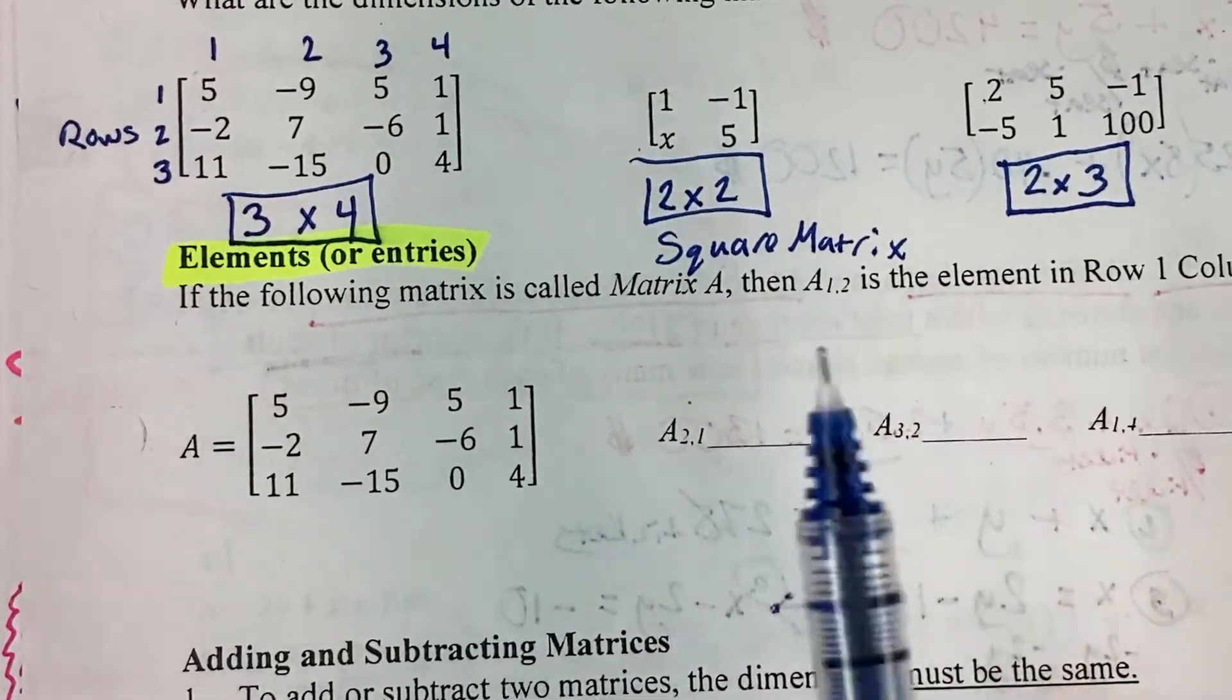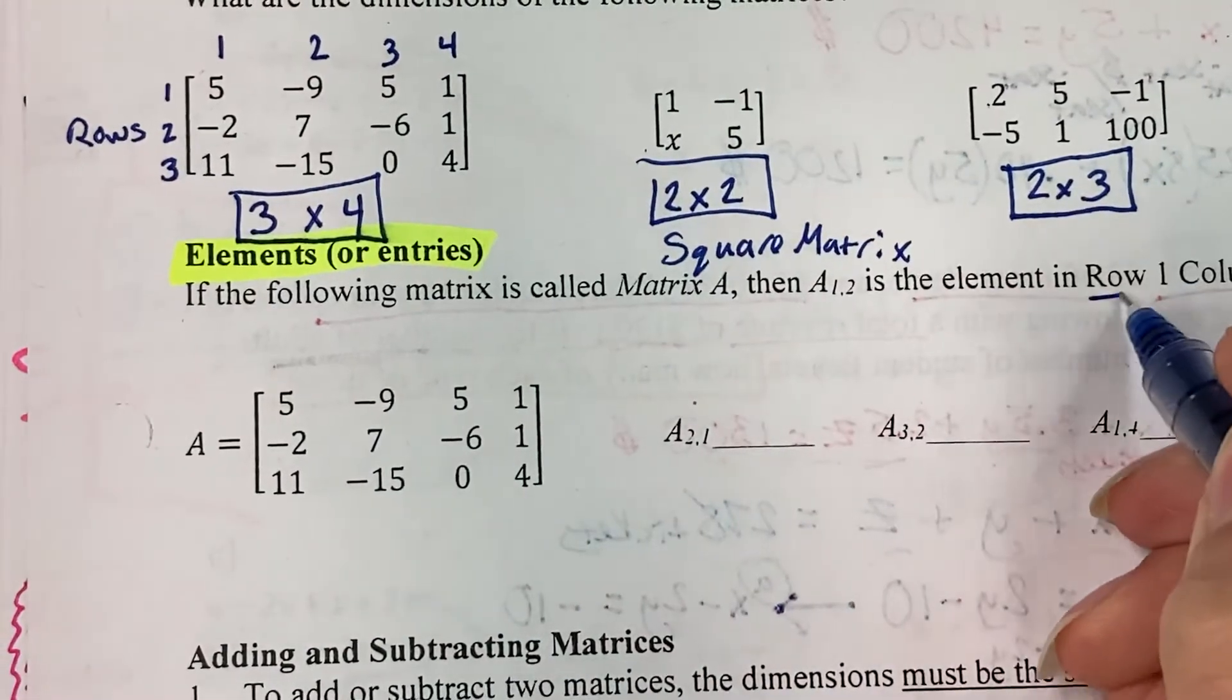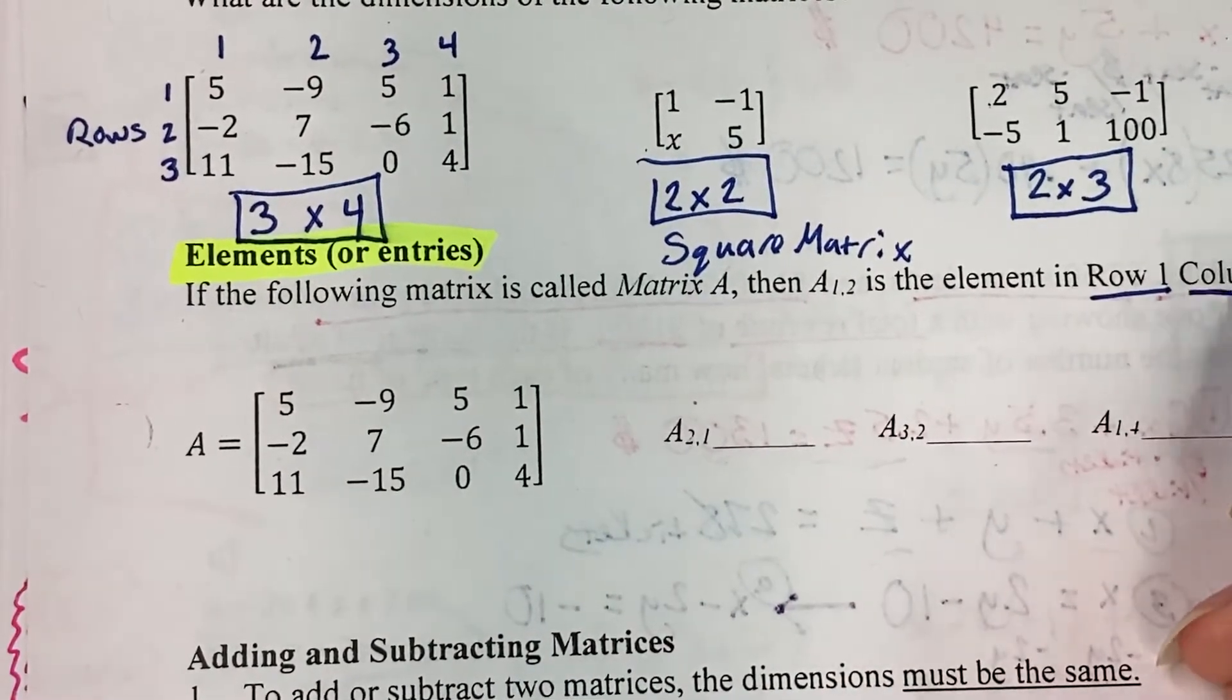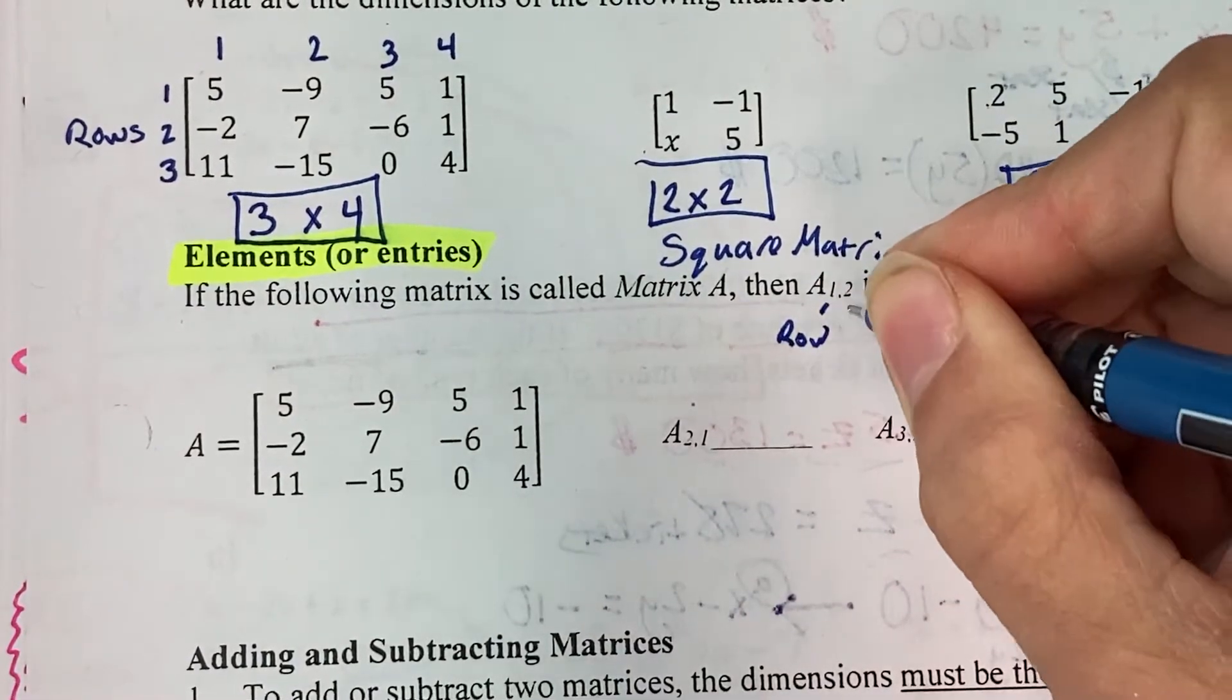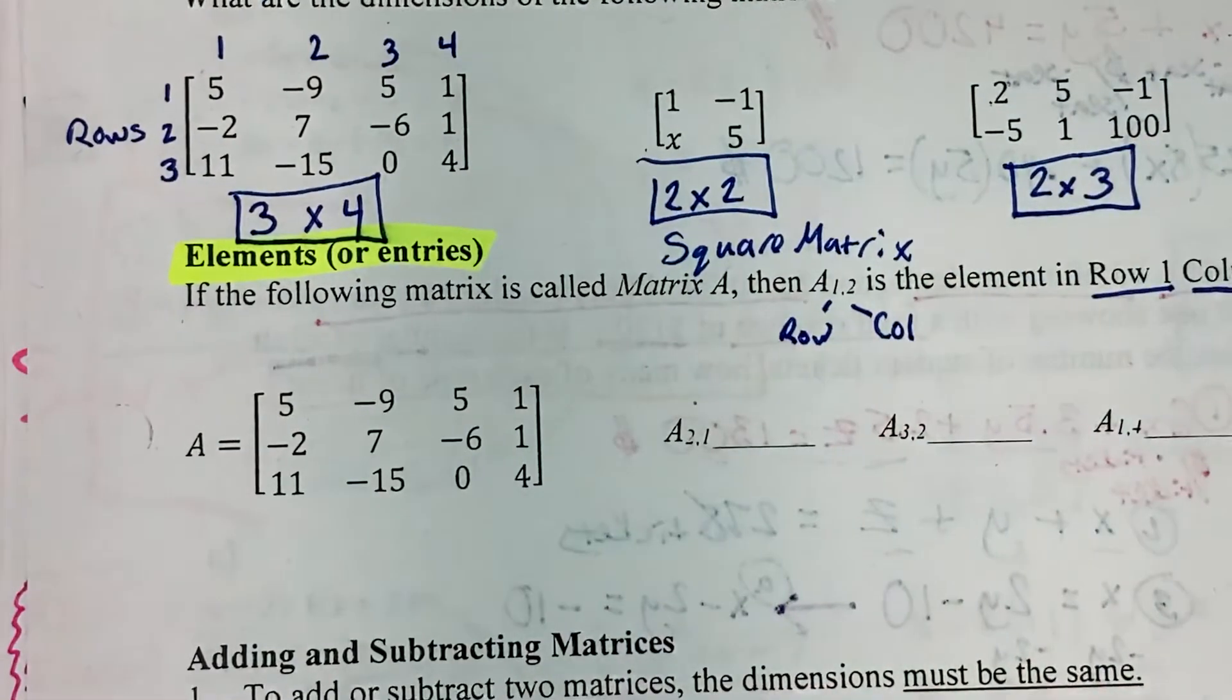then A1,2 is the element in row 1, column 2. So the 1 represents the row number, and the 2 represents the column number.